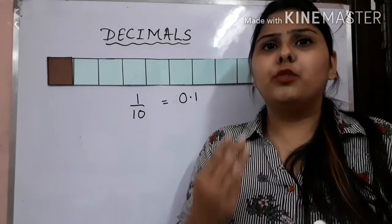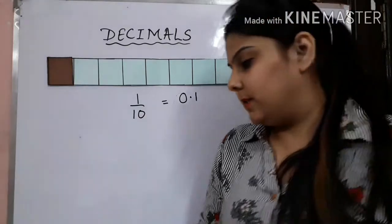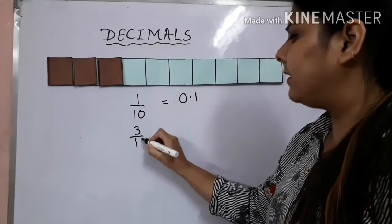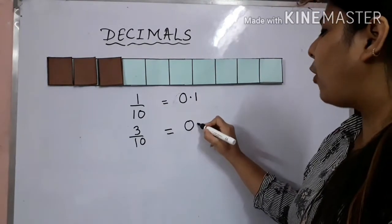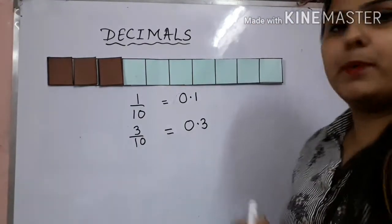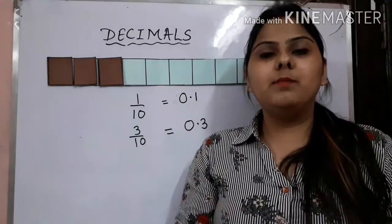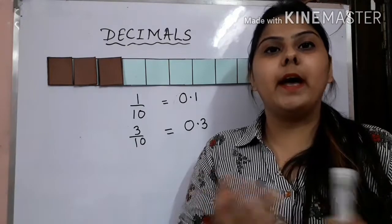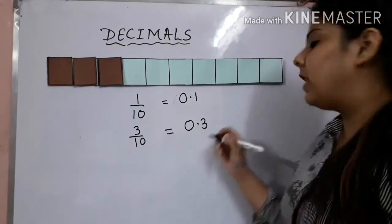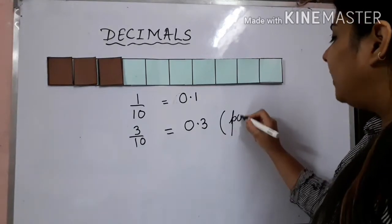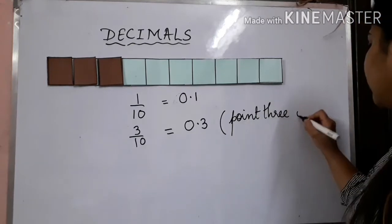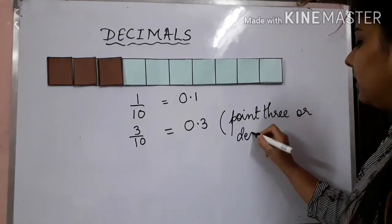What if I shade 3 parts out of the 10 equal parts? My fraction comes out to be 3 upon 10, which is equal to 0.3. A decimal is represented with the help of a dot. If I want to write the number name for this decimal, I will write it as 0.3, or I can also write it as decimal 3.